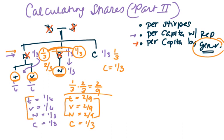Whereas using per capita with representation, T and V get a smaller share than N does.